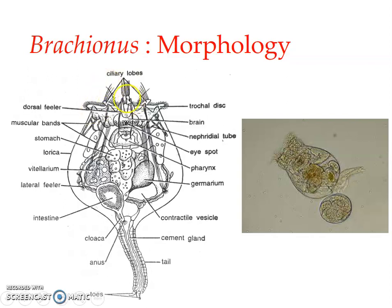As discussed when we covered the basic structure of any rotifer, Brachionus has a non-ciliated terminal disc in the center known as the apical field. This is encircled by a ciliary zone known as the corona, also known as the wheel organ. This wheel organ is involved in locomotion as well as food collection.